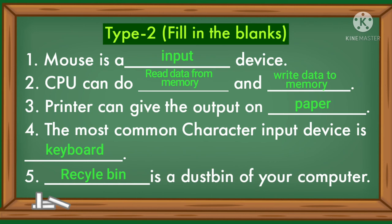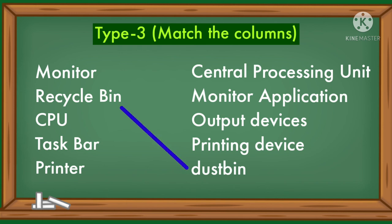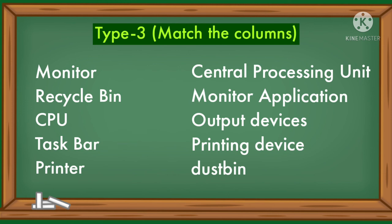Match the columns: Monitor — monitor is an output device. Recycle bin — is a dustbin. CPU — Central Processing Unit. Task bar — monitor. Application — printer — printing device.